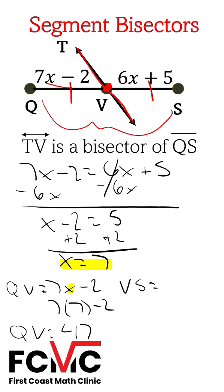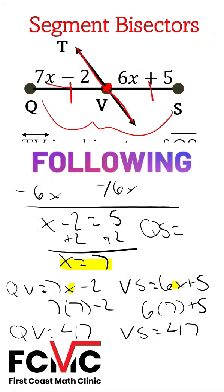Vs should be the same thing. So that's 6x plus 5. We'll replace x with 7. So 6 times 7 plus 5. We'll get 47 for Vs as well. Our total length of Qs is going to be 47 plus 47 or 94.